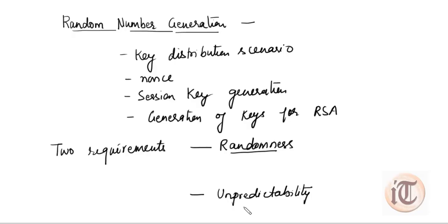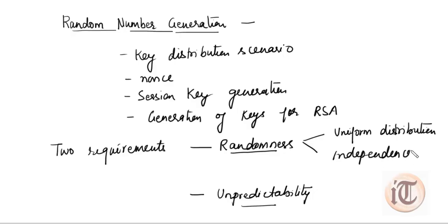What is randomness? Randomness itself has two further requirements: uniform distribution and independence. Uniform distribution means that the distribution of numbers in the sequence should be uniform — that is, the frequency of occurrence of each number should be approximately the same. Independence means that no one value in the sequence can be inferred from the others. If these two requirements are fulfilled, then the randomness property is also fulfilled.